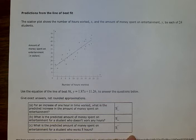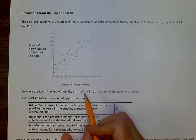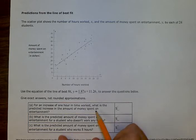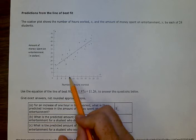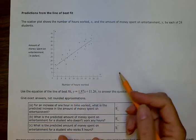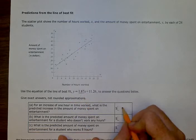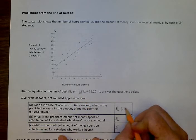For an increase of one hour in time worked, what is the predicted increase in the amount of money spent on entertainment? So that comes from this part of the equation, right? That's the slope. The slope tells us how much it changes. So if we increased one hour, the slope would go up 1.87. That's the slope. Or $1.87.